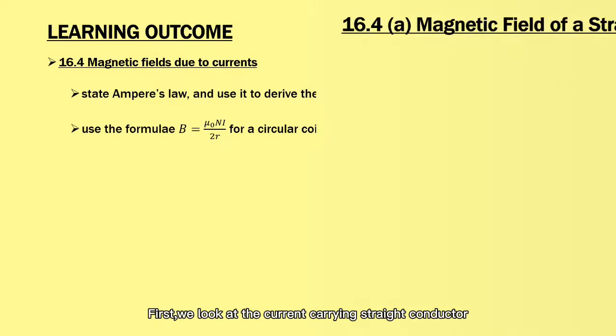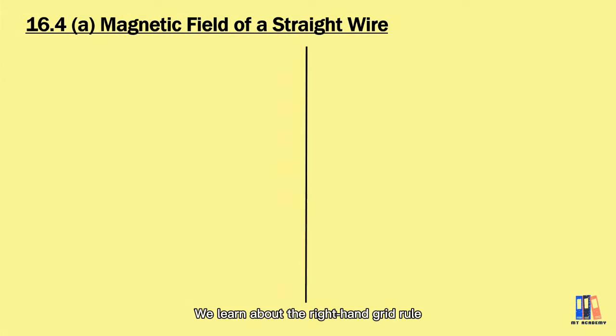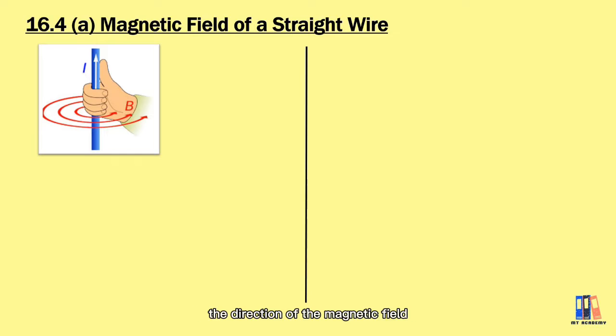First, we look at the current-carrying straight conductor. We learned about the right-hand grip rule, which we can use to identify the direction of the magnetic field produced by the current.